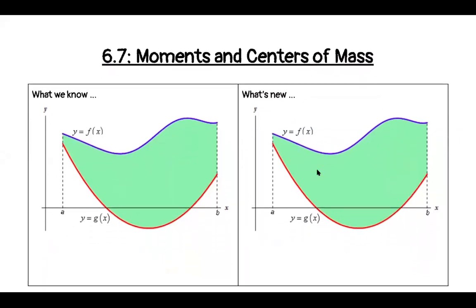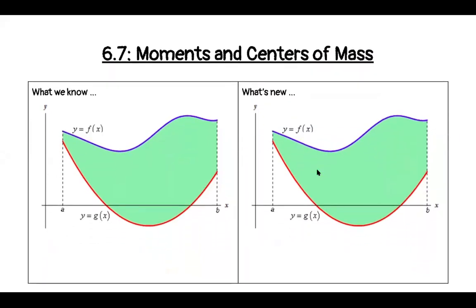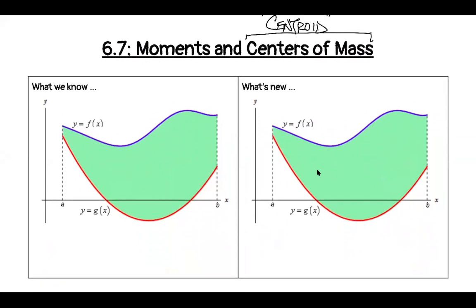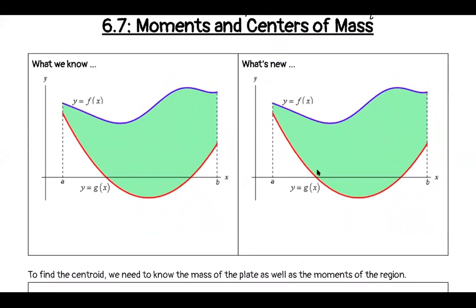Section 6.7 is all about moments and centers of mass. Another word you might have heard for centers of mass is centroid — centroid is another word for centers of mass. Like we've been doing all summer, let's go ahead and start with what we know and what's new.